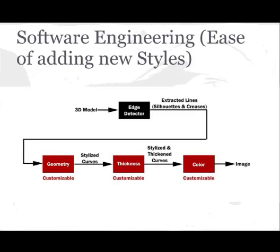One of the main goals of our project was to allow users to write their own styles. To simplify this process, we came up with our own pipeline architecture. The pipeline starts with the extraction of silhouettes and creases. These are then provided as the input to the next module, the geometry module, which can alter the true extracted lines into stylized curves.